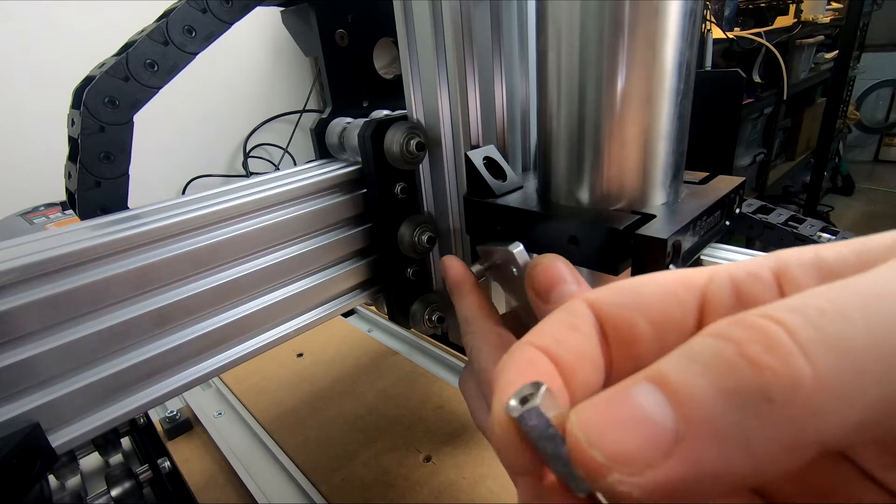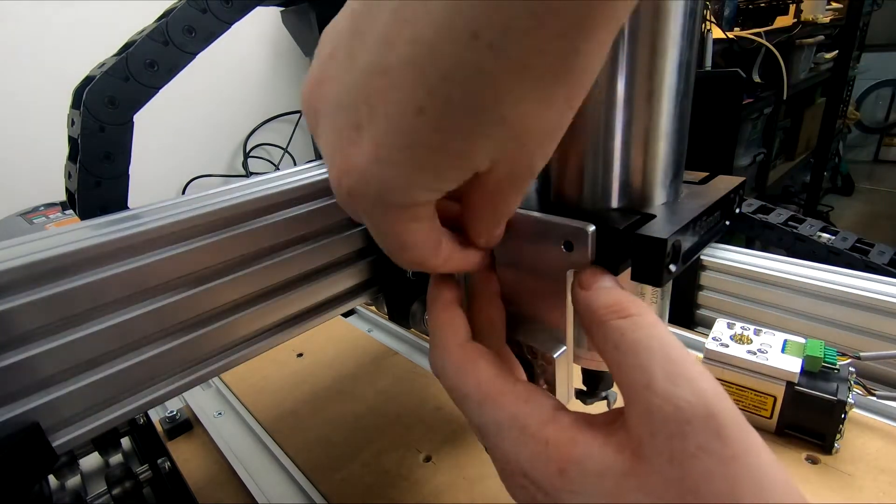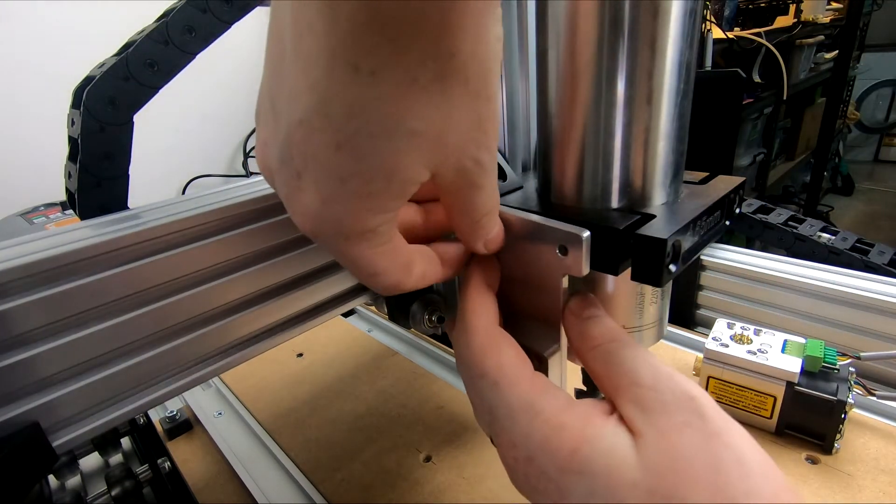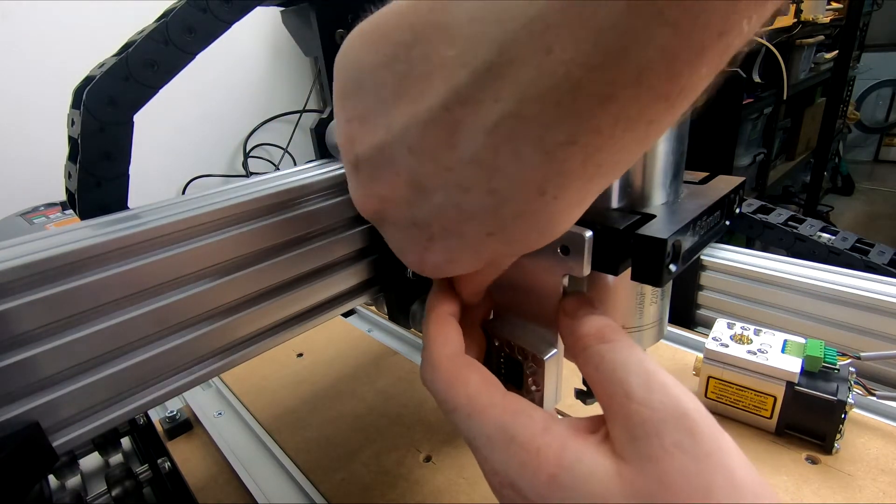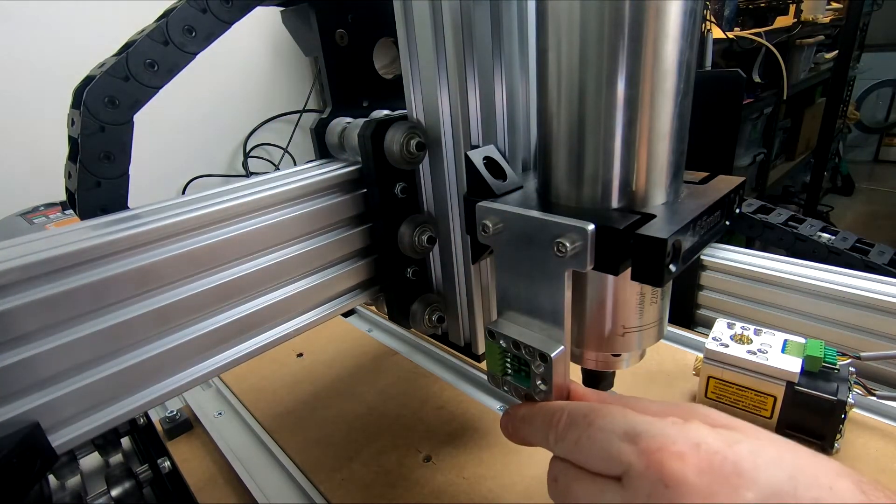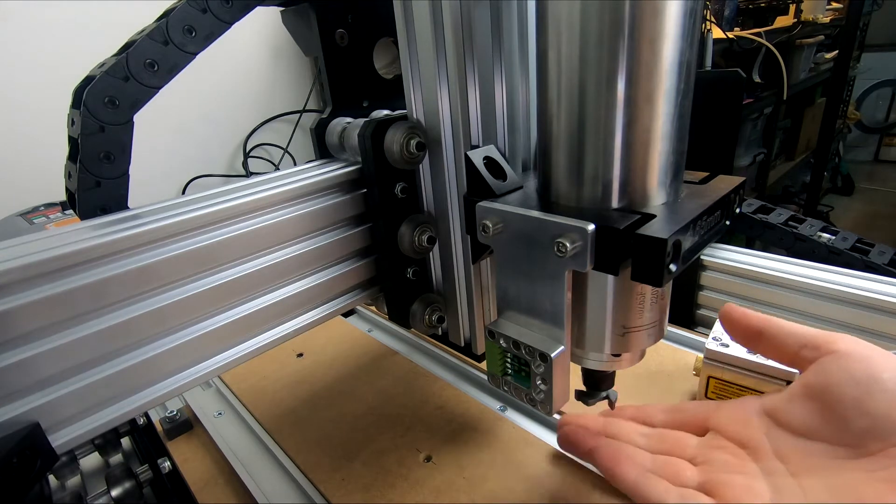They also did include these. I don't know why you'd want to space it off more offset, but there could be a reason on your machine. But on our machine we're just going to bolt this straight to the side of it. Let's bolt it on. That's very solid. That other way at the bottom of my spindle.